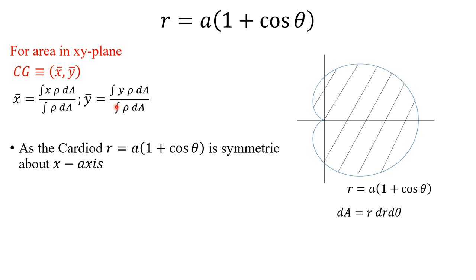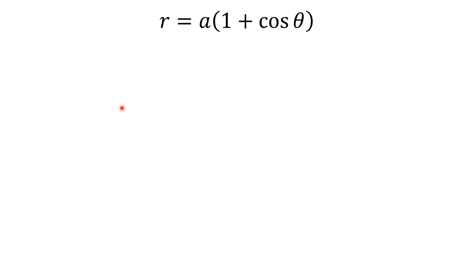So we have to find only x bar. Now the formula of x bar is this, where we will cancel out this rho from the numerator and denominator. So we will get x bar is equal to double integral over A, x equals r cos theta, and dA is equal to r dr d theta, divided by double integral over A, r dr d theta.